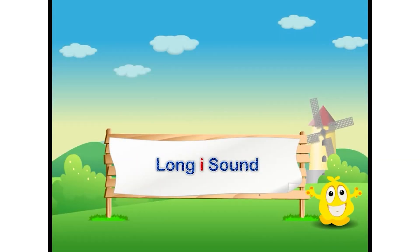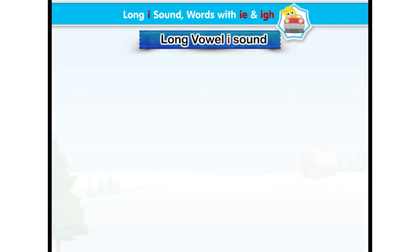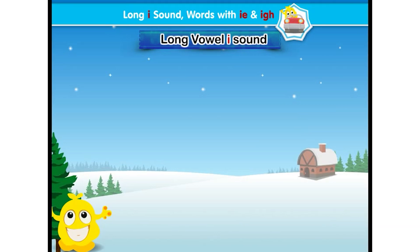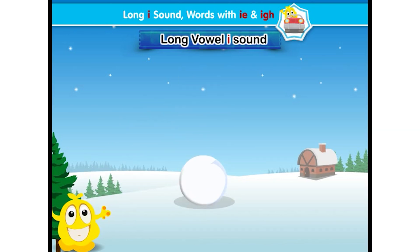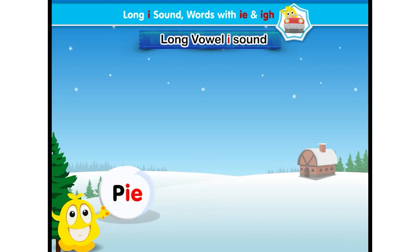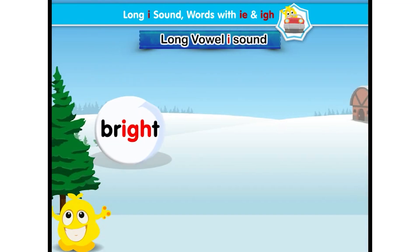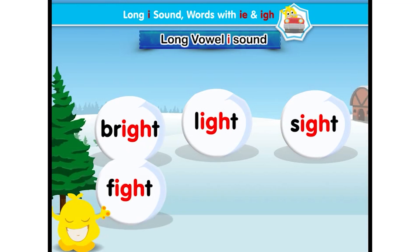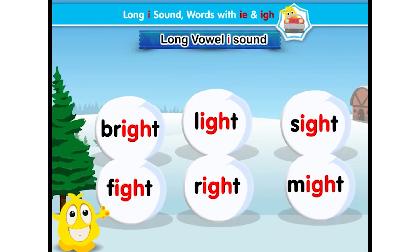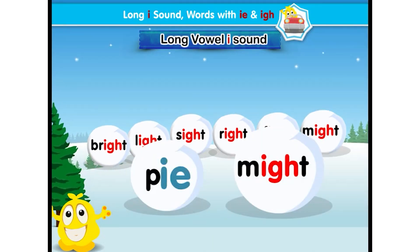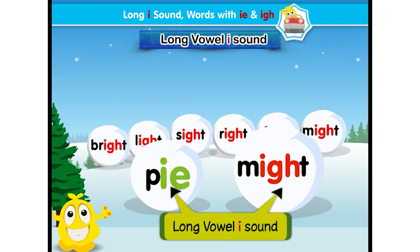Long I sound. Let's learn long vowel I sound. It's an ice land — let's enjoy ice balls. Each snowball has a word written on it. Observe the spelling pattern and listen to the words: pie, die, lie, bright, light, sight, fight, write, might. In these words, I-E and I-G-H have the same sound — it is the long vowel I sound.